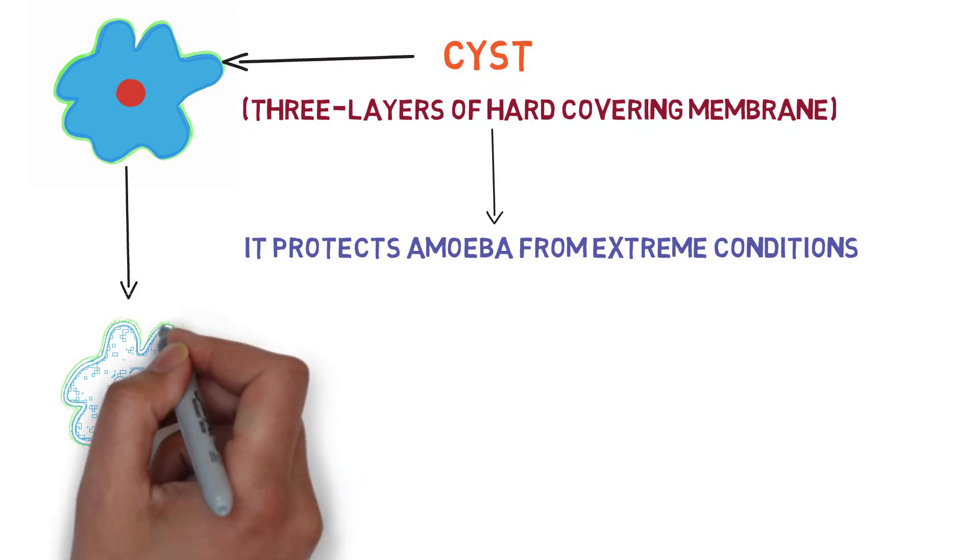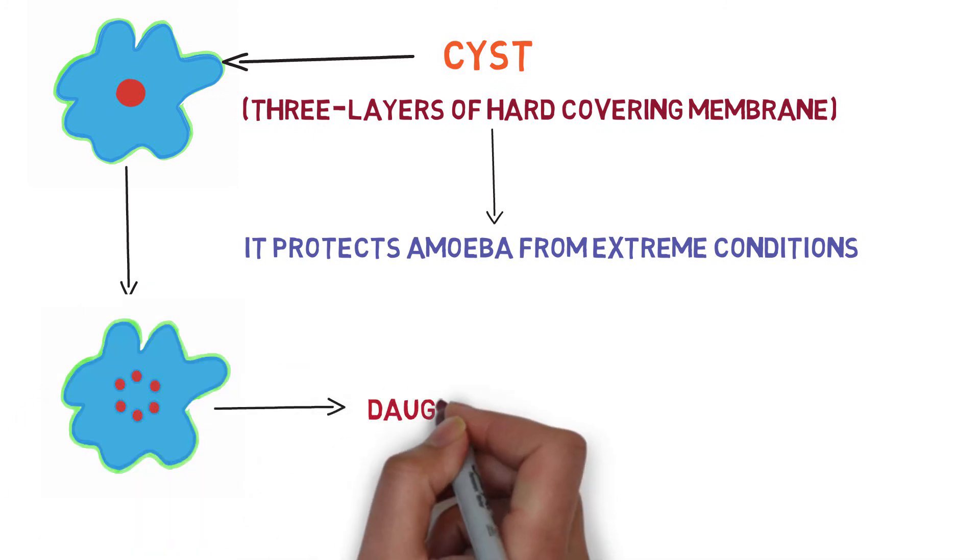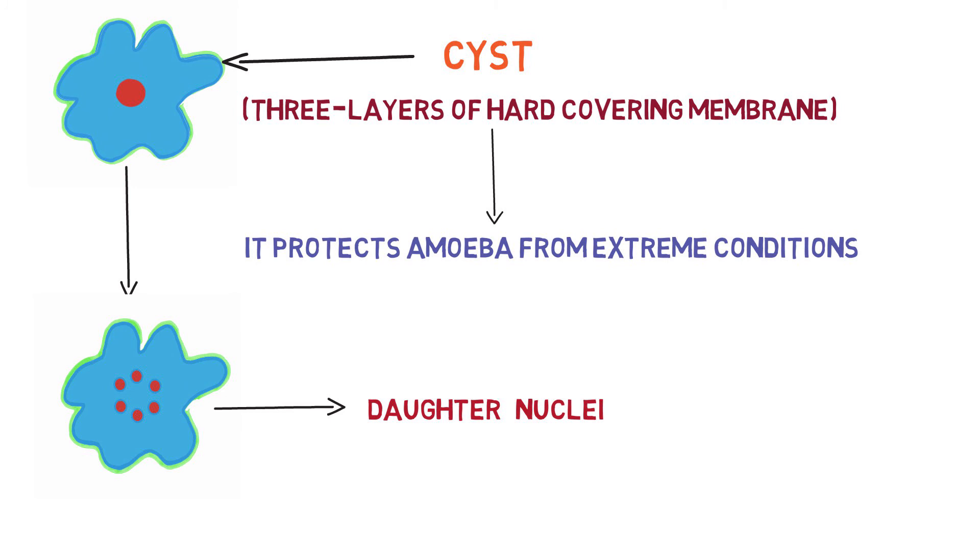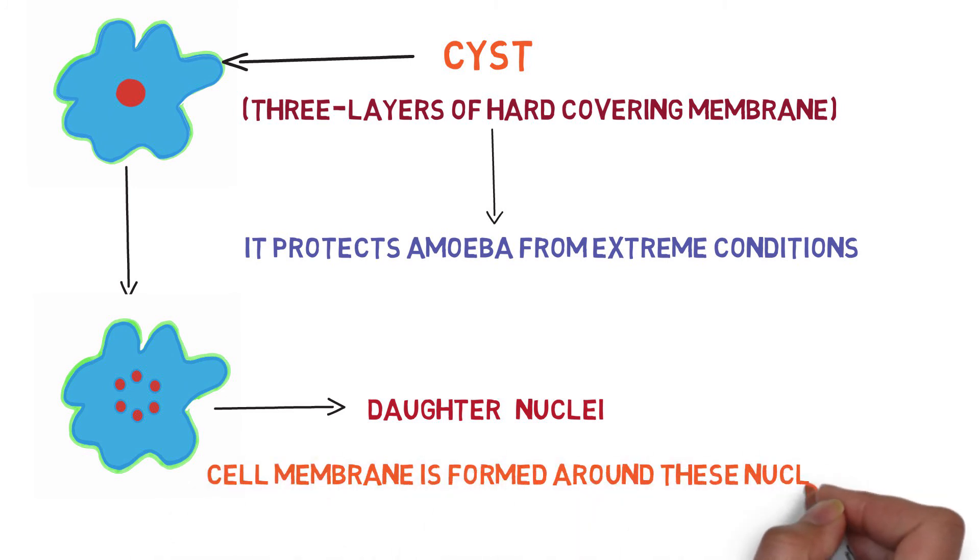Inside the cyst, the nuclei divide repeatedly and many daughter nuclei are formed. Then around these nuclei, cell membrane is formed.